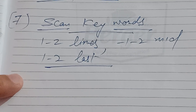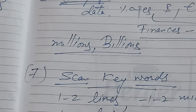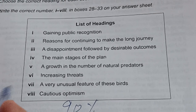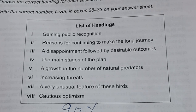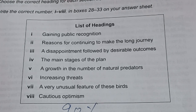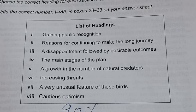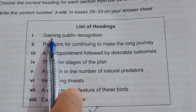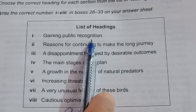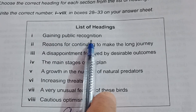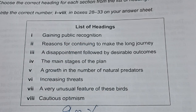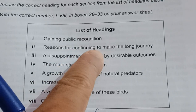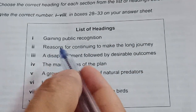Now I'm going to solve a practical reading test and we will see how many of the tips we've learned actually work. Whenever you find list of headings, the first thing is to read all the headings very carefully and try to understand the meaning behind them. If you only read the words without understanding the meaning, you will definitely make mistakes. Heading one: 'gaining public recognition' — gaining means getting public attention or the public started recognizing and giving importance to something.